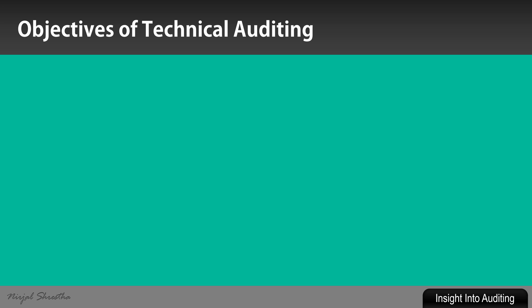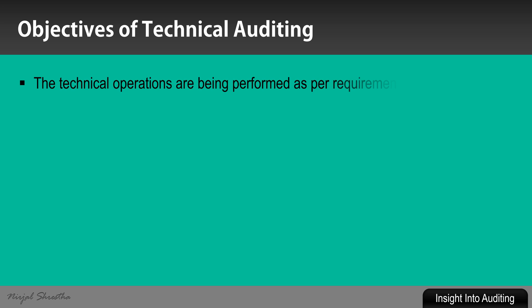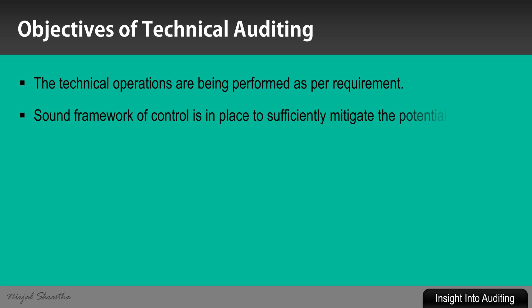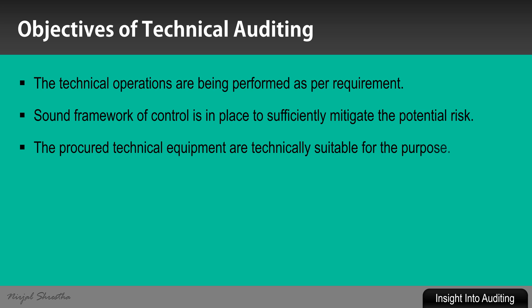Objectives of technical auditing: It reviews the operation and process and ensures that technical operations are being performed as per requirements and operational standards. It ensures that a sound framework of control is in place to sufficiently mitigate and manage potential risk. It also ensures that procured technical equipment is technically suitable for the purpose and as per requirements specified in the specification document.